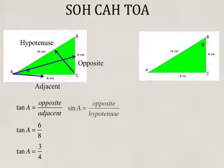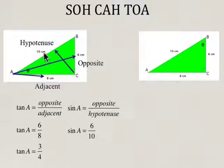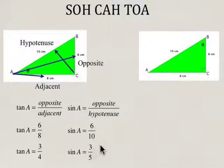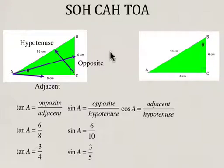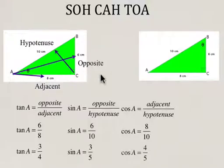For sin, sin is opposite over hypotenuse. The opposite side is 6 and the hypotenuse is 10, so sin A is 6 over 10, which in simplest form is 3 over 5. For cosine, it's adjacent over hypotenuse. The adjacent side is 8 centimeters and the hypotenuse is 10 centimeters, so cosine A is 8 over 10, which reduces to 4 over 5.